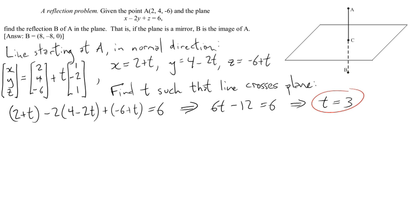So, if you start at 2, 4, minus 6, and add 3 times the normal vector, you wind up at the point with coordinates 5, minus 2, minus 3. That's the point C there on the diagram. And you can check that those coordinates, 5, minus 2, minus 3, do indeed satisfy the equation of the plane.